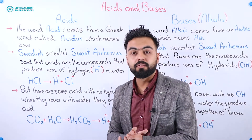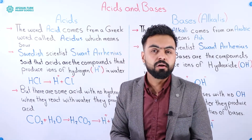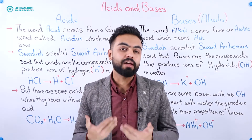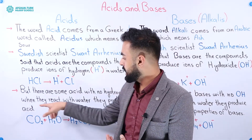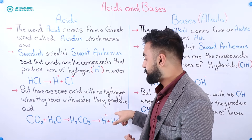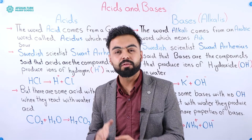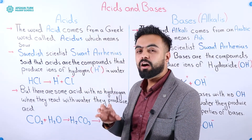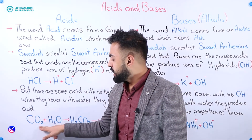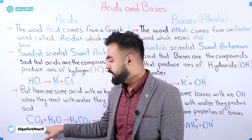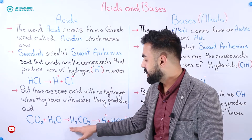But there are some compounds that are acids but do not produce hydrogen in water, because they actually do not have any hydrogen. So there are some acids with no hydrogen. When they react with water they produce acid. How do we know that they are acids? Because they have the properties of acid, and having hydrogen is not the only property of acid.